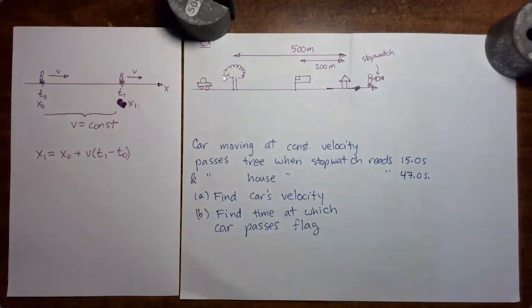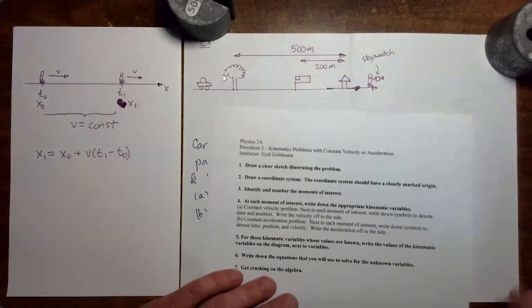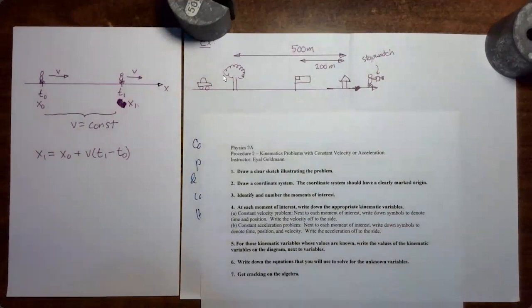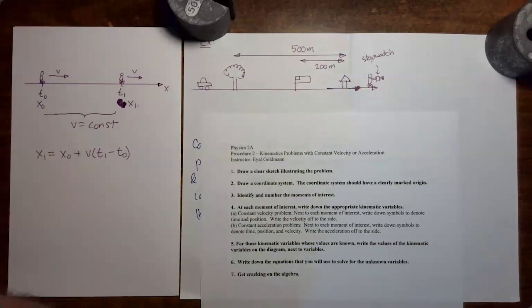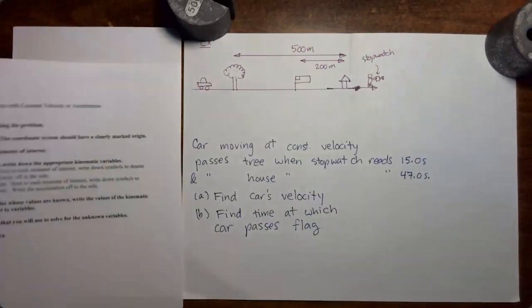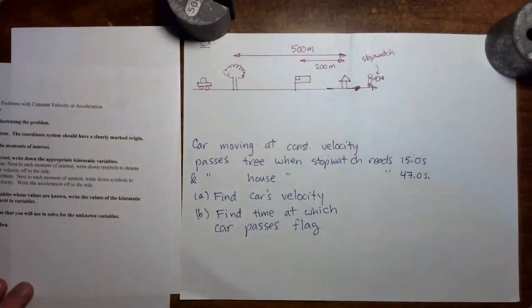We're going to use this equation to solve an example problem, and we'll also be using a handout that will guide us through our kinematics problems. This handout is available at the top of the module in the module introduction. Let's look at the problem, and then we will let the handout guide us through the solution.